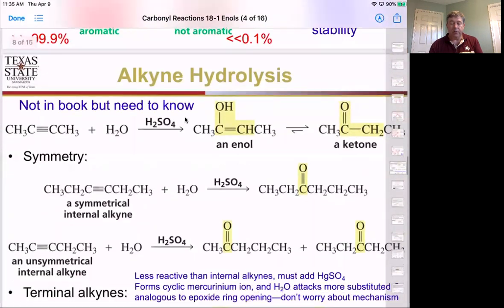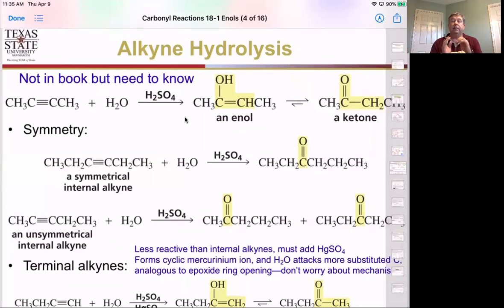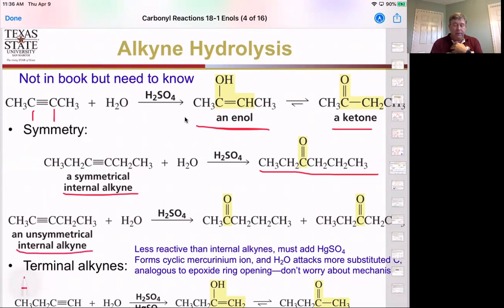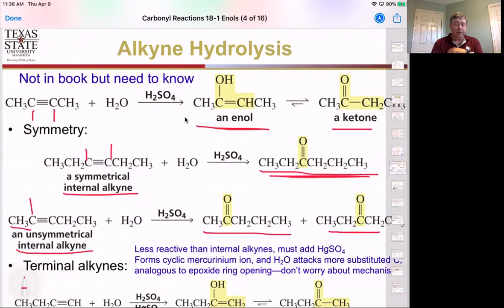Another way to make enols and ketones is to add water across an alkyne. This is typically done with an acid catalyst, adding across to give a hydrogen on one side and an OH on the other, giving us the enol form, which can rearrange to the ketone form. With a symmetrical internal alkyne, we end up with a symmetrical ketone as the primary product. With an unsymmetrical internal alkyne, the ketone can end up in two different locations, giving a methyl ketone as one isomer and an ethyl ketone as the other.